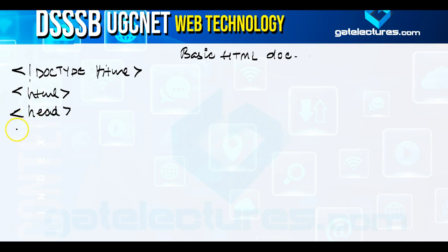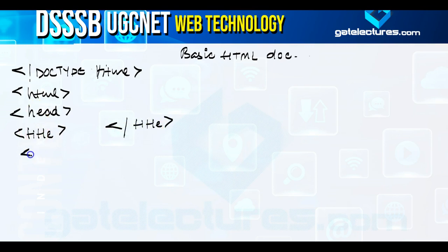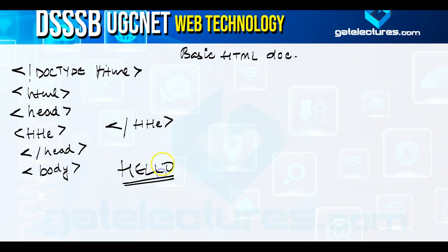The title tag is where you mention the title you want to set for the document. After the title, we have the body tag. Whatever you write inside the body tag will be displayed on your screen. For example, if you write 'hello' in the body, then at runtime 'hello' will be printed on your screen. Then you close the body tag and close the HTML tag.